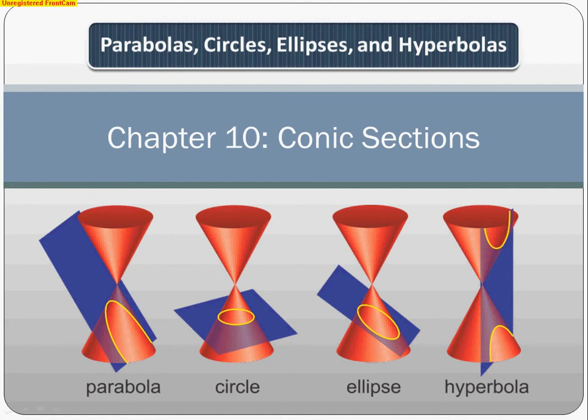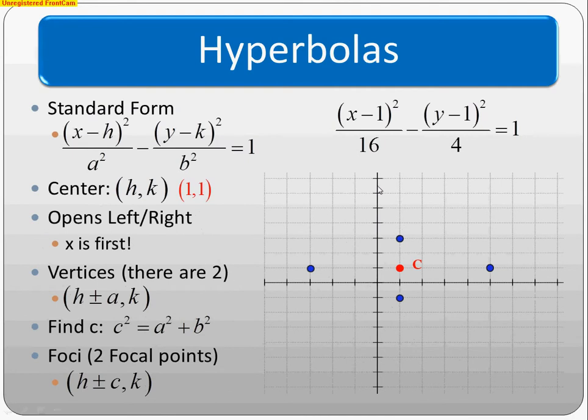Welcome back everyone to Part 3 of our Chapter 10 Conic Sections. Part 1 covered parabolas, Part 2 covered circles and ellipses. Now in Part 3, we're doing hyperbolas, where we slice the cone straight up and down and get two parabolas facing opposite each other.